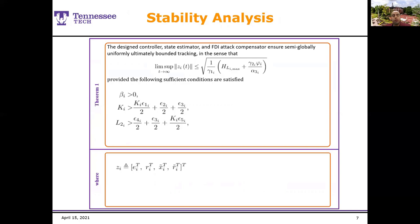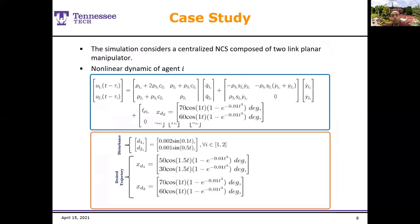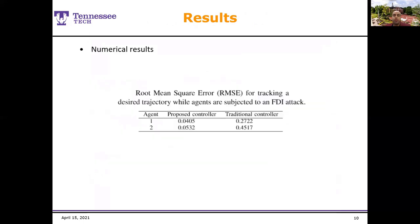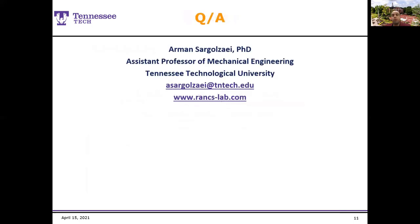The designed controller, state estimator and FDI attack compensator ensures semi-global uniformly ultimately bounded tracking if we satisfy the sufficient conditions by selecting appropriate controller and observer gains. So, for the simulation, a centralized network control system with two-link planar manipulator is selected. We injected FDI attacks to the agents and figures show the position errors and angular velocity errors for the first and second robots under FDI attacks. We compare our results with traditional controller which shows better trajectory tracking under FDI attacks. So, if you have any more questions, you can email me or you can check our website which is RANC-lab.com. And thank you for your time and have a great day.